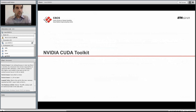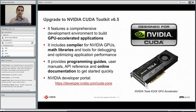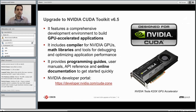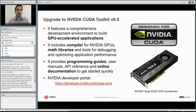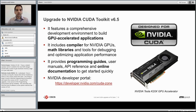The next section covers the NVIDIA CUDA Toolkit upgrade to version 6.5 on Piz Daint. The CUDA toolkit features a comprehensive development environment for building GPU-accelerated applications, including the NVCC compiler for NVIDIA GPUs, math libraries, and tools for debugging and optimizing performance. These complement officially supported tools at CSCS like Perf Tools and DDT debugger.